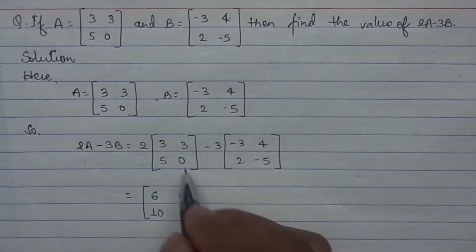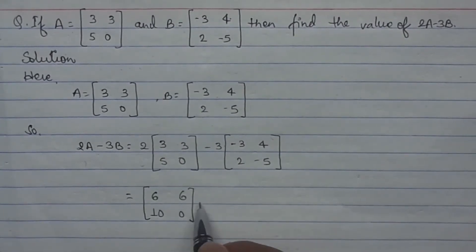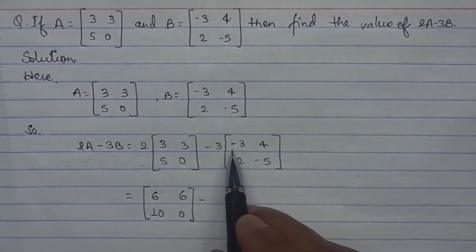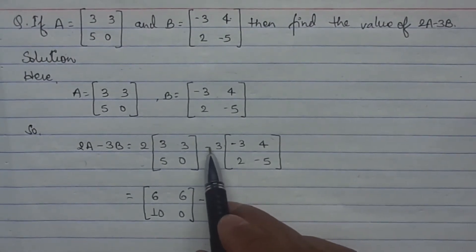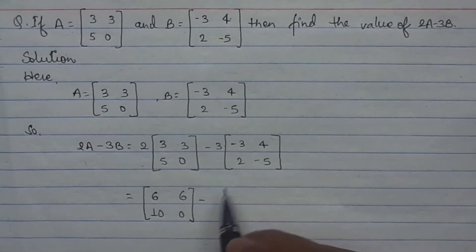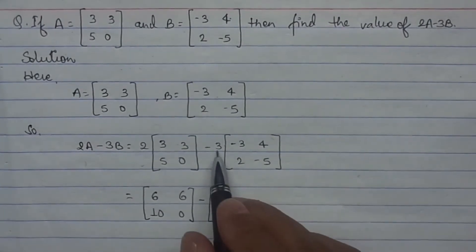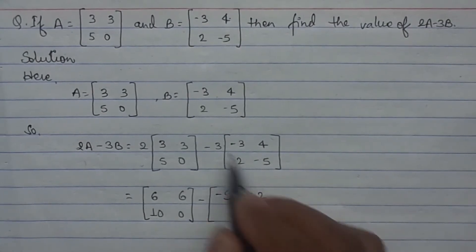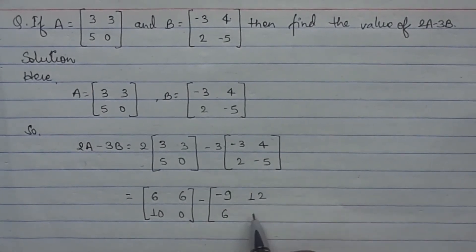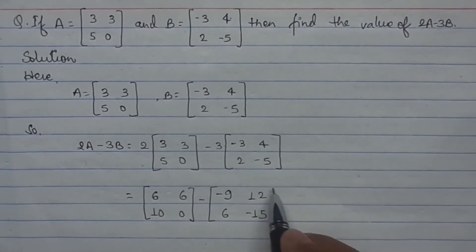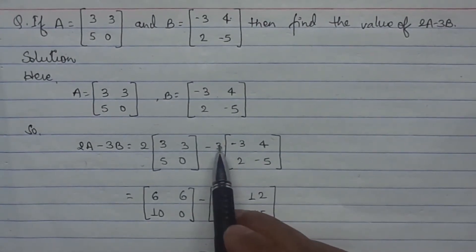For this matrix, multiply only by the positive number. Multiply by 3 only: 3 into -3 is -9, 3 into 4 is 12, 3 into 2 is 6, 3 into -5 is -15.